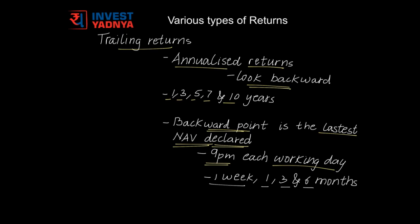Trailing returns can be used to know how a fund has performed in the recent past. But if a fund has performed exceptionally well in the last one year, it could easily lift returns of 3, 5, 7 and 10 trailing years. Since you cannot make out which year in the past has really done well, there is a need to look at calendar returns as well.